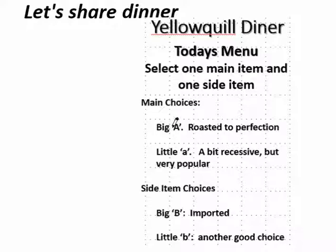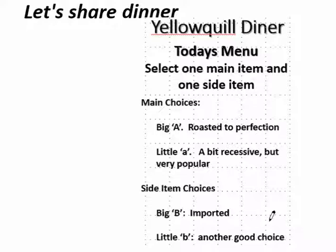The big A is pretty good today — roasted to perfection. Or the other main choice is little a; it's a bit recessive but very popular. For your side, you could get big B — it's imported — or you might decide to have little b. Each of those is your possible choice. You're going to hook up with your partner, go have dinner, and share your dinner to see what could happen.